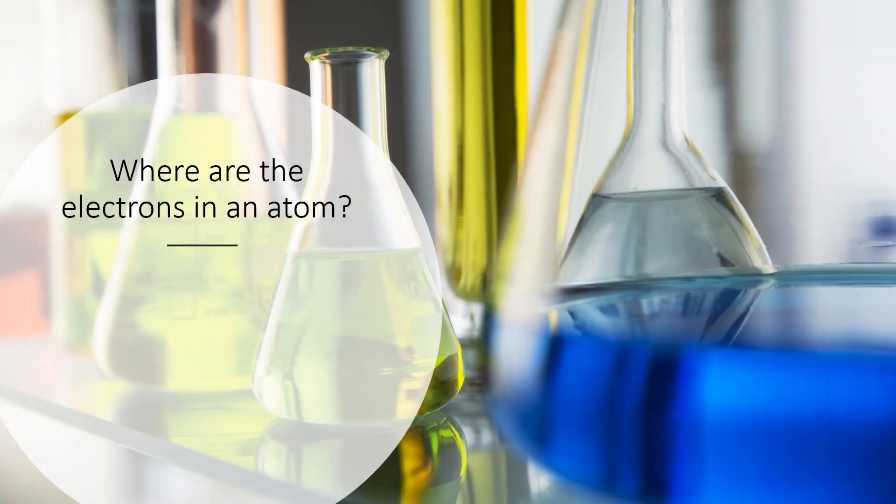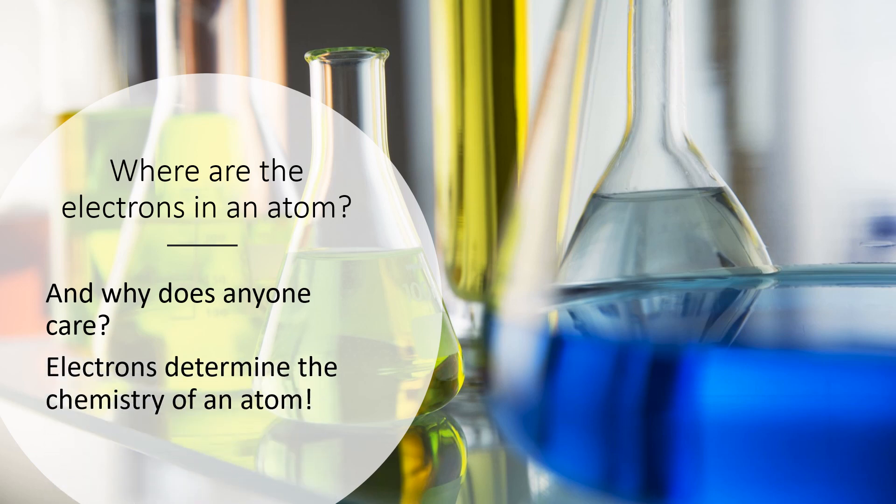So we're trying to figure out where are the electrons in an atom and why does anybody care about this? Well, if we're looking at the flasks of colored compounds in this slide, that color is due to electron transitions in an atom. The reason that we care about those electron transitions is that the electrons determine the chemistry of an atom - all of the compounds that the atom will form and what sort of reactions it will undergo.